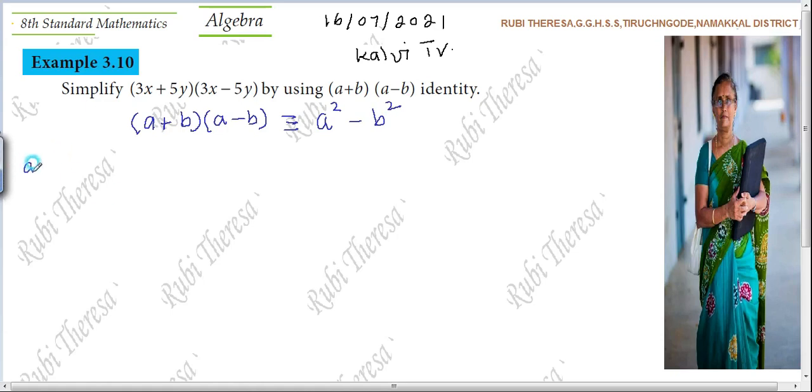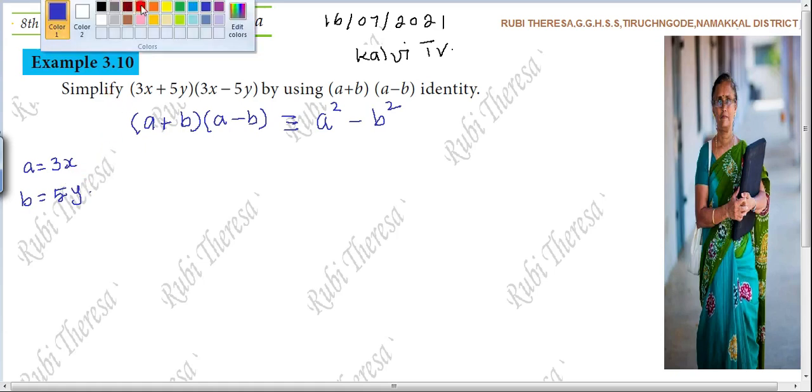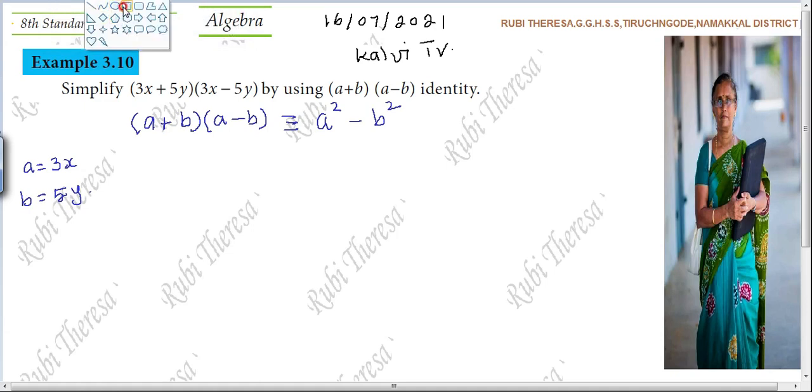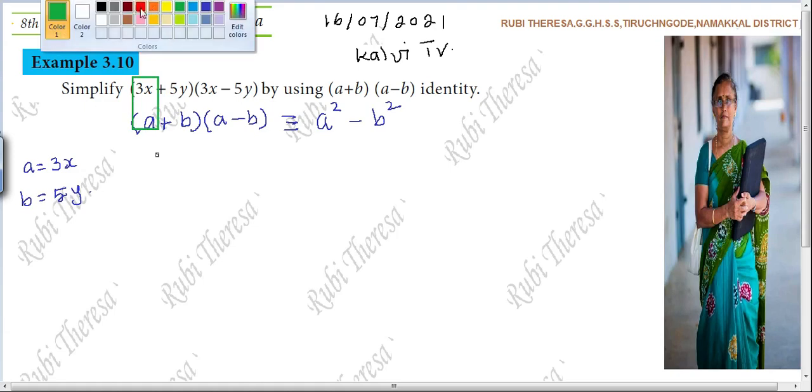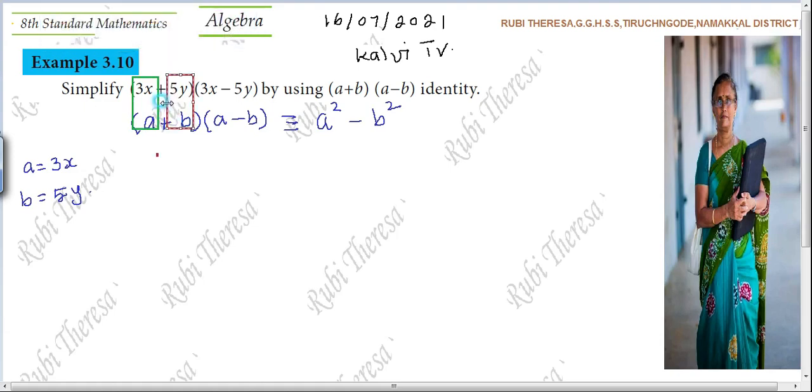So, A equal to what? Very good, 3x. B equal to 5y. So, just for your understanding, I am putting this rectangle here. So this is A, and this is B. Do you follow? 5y. In the place of B you have 5y, in the place of A you have 3x.